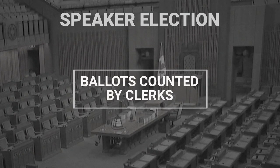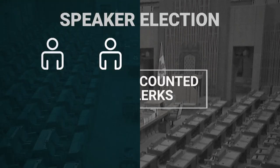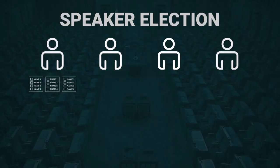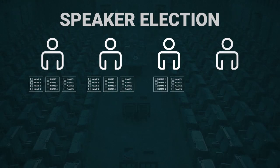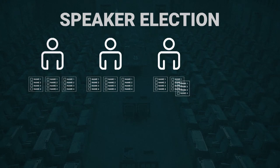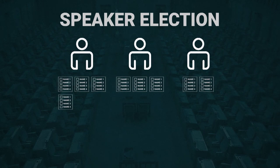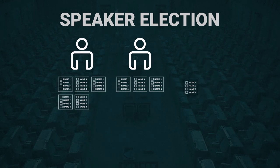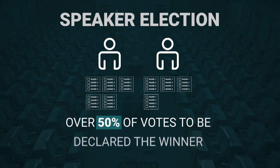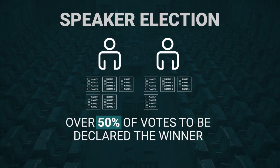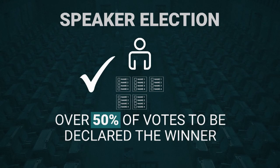The ballots will then be counted by the clerks. Ballots are tallied and if no one candidate receives more than 50% of the vote, the candidate with the lowest number of votes is eliminated and those votes are redistributed to the second marked choice. This continues until one candidate has accumulated 50% of the votes and is declared the winner.